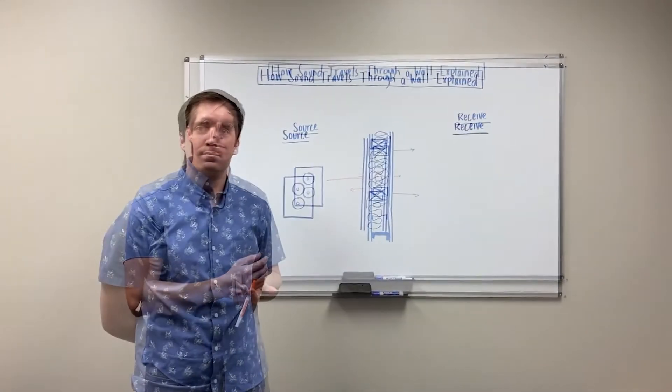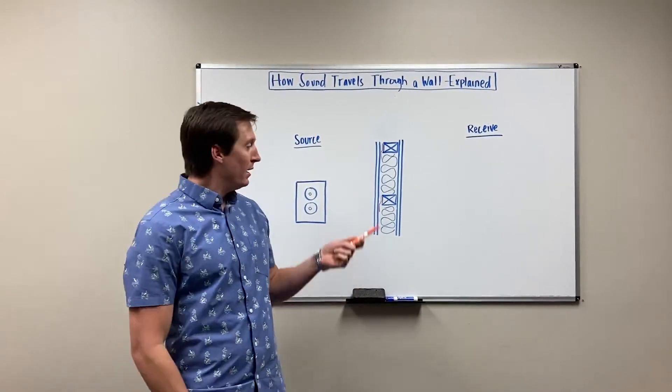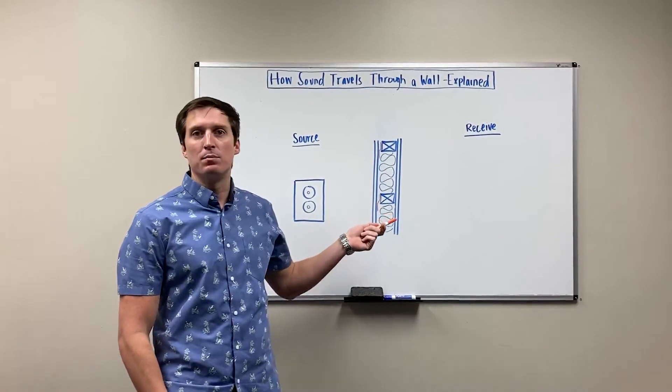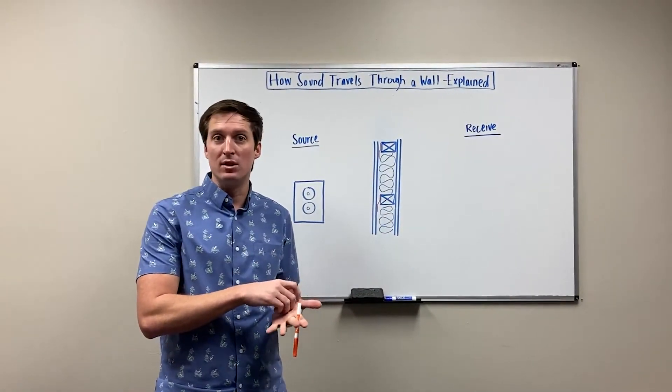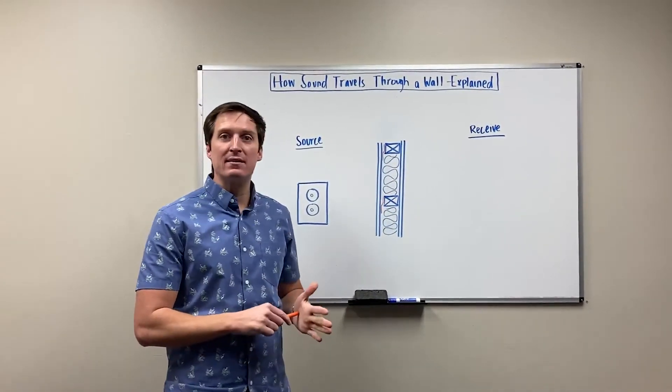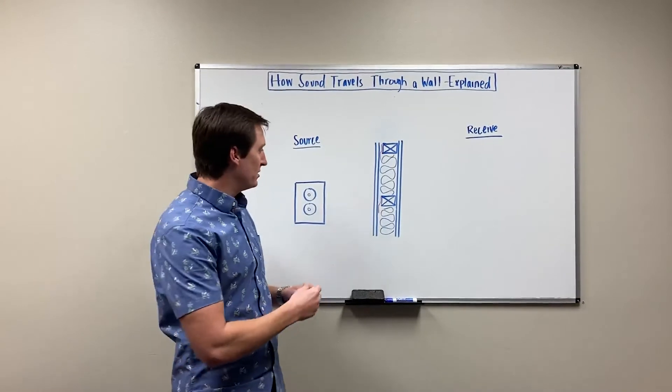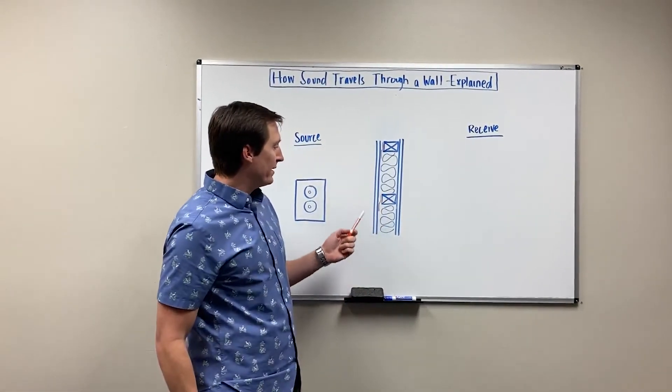A common approach that end customers and architects use is resilient channel to break that connection between the gypsum and the wood stud or metal stud. RC can be an effective way to improve the STC because it breaks the rigid-to-rigid connection between the stud and the wallboard.